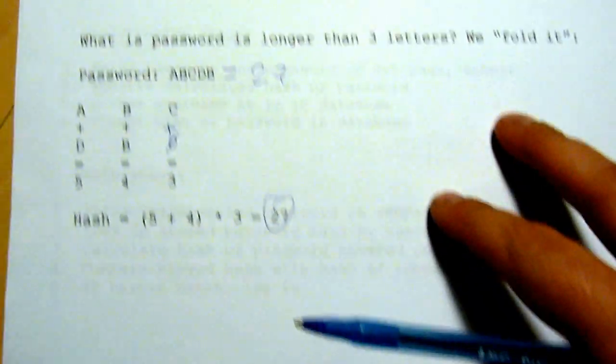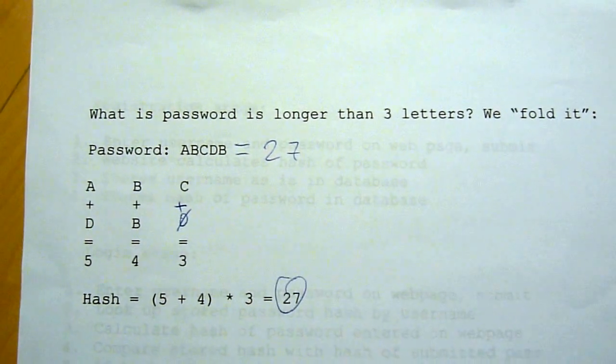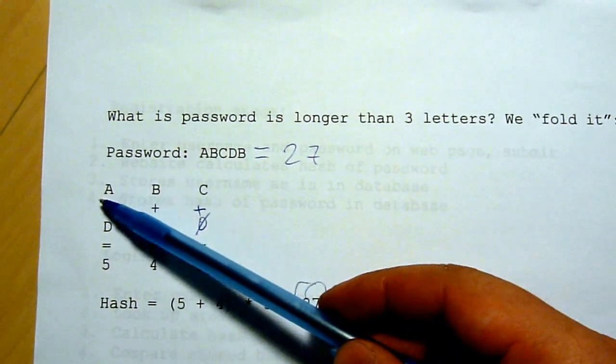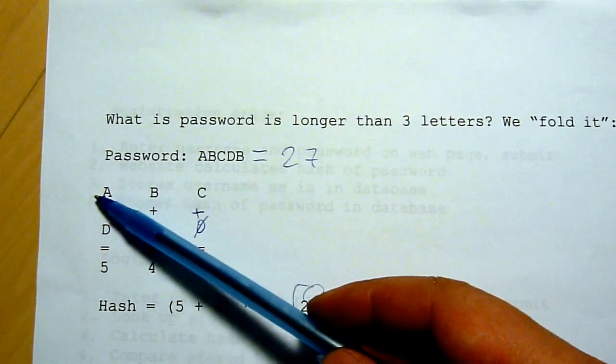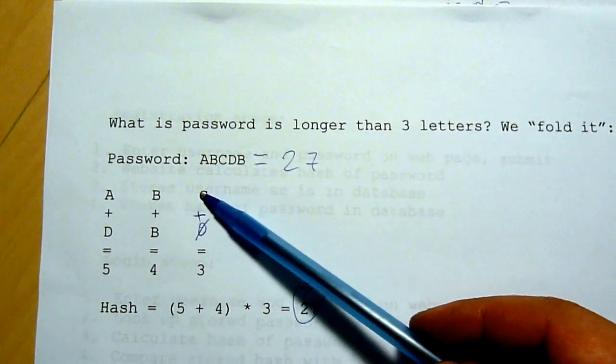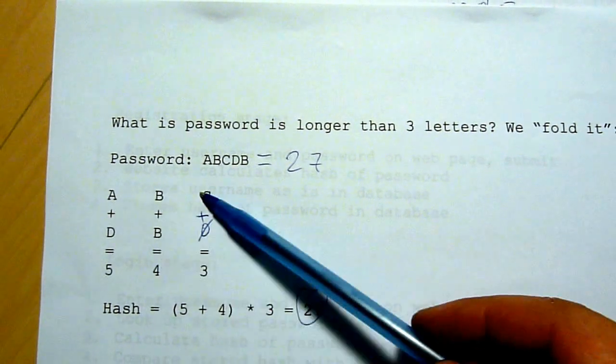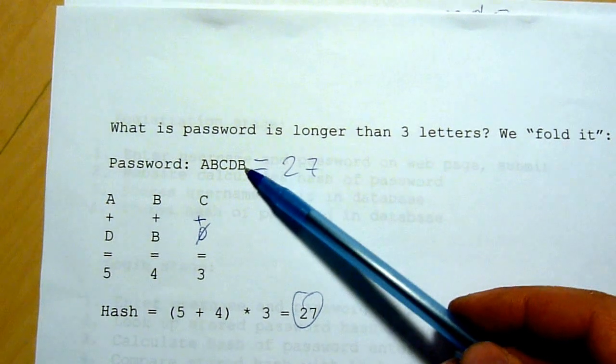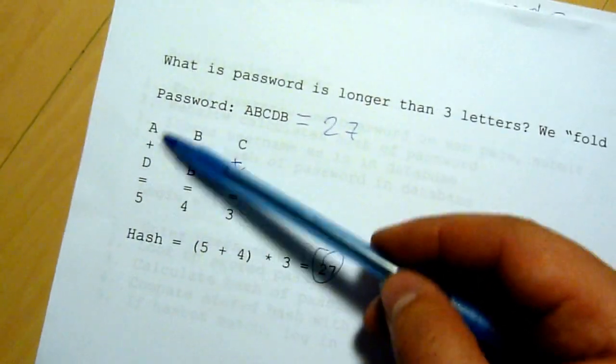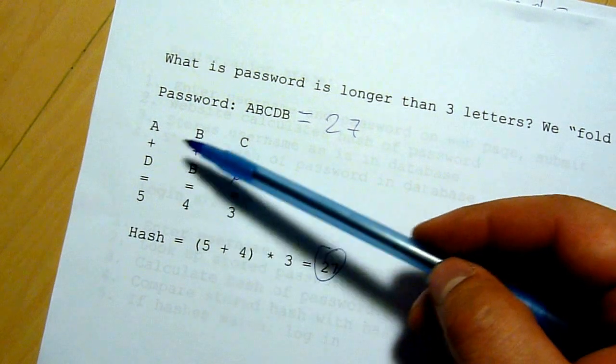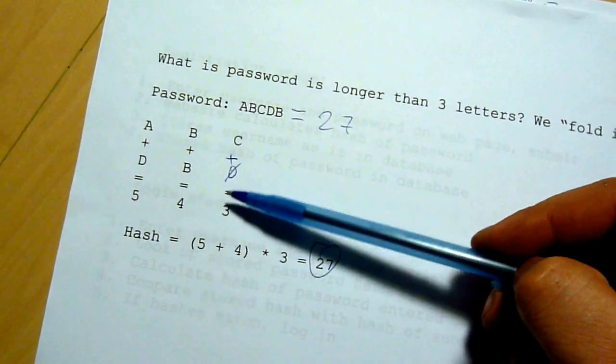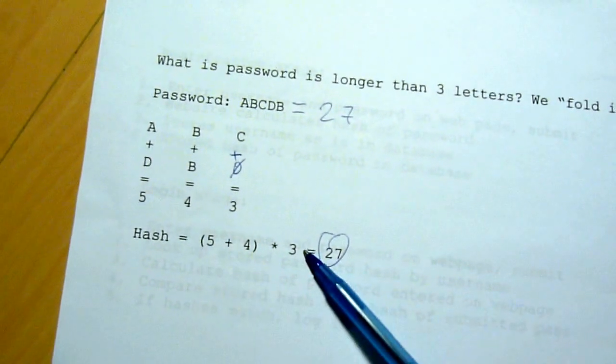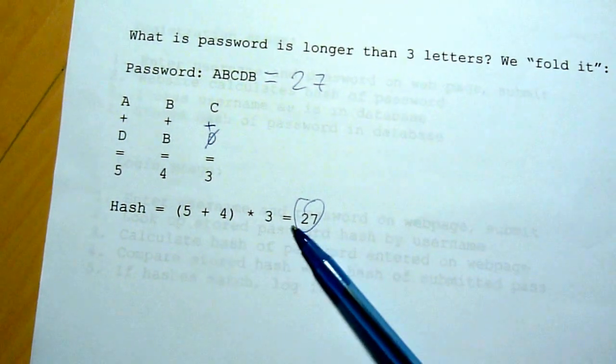So the question is, what if the password is longer than three letters long? We fold the password. We will break the password down or input data into chunks of 3 in our case. And then we'll have ABCDB. And then we'll add the columns. So A plus D equals 5, B plus B equals 4, C plus nothing equals 3. So we will fold our password into just three numbers, and then we'll apply our hash function to the three numbers. So we'll get 27.